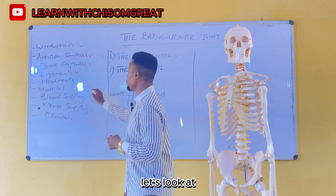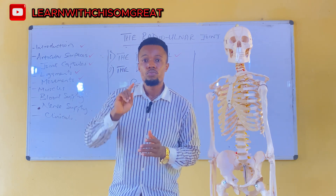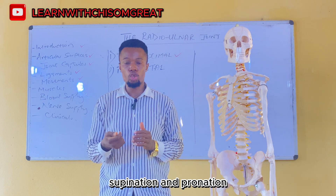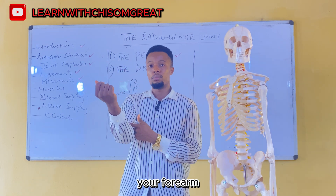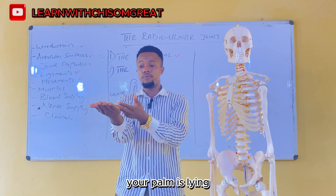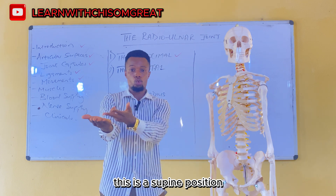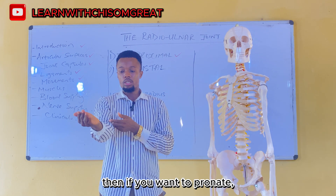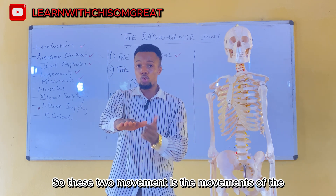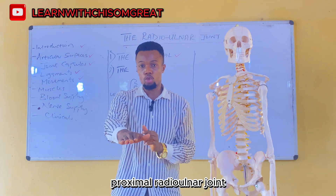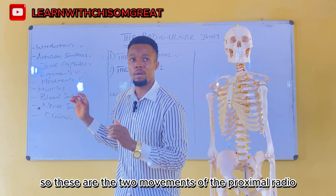The proximal radioulnar joint has two movements: supination and pronation. In supination, when you flex your forearm, your palm is facing up or lying anteriorly. In pronation, your palm and the anterior part of your forearm are lying downward or posteriorly. These are the two movements of the proximal radioulnar joint.